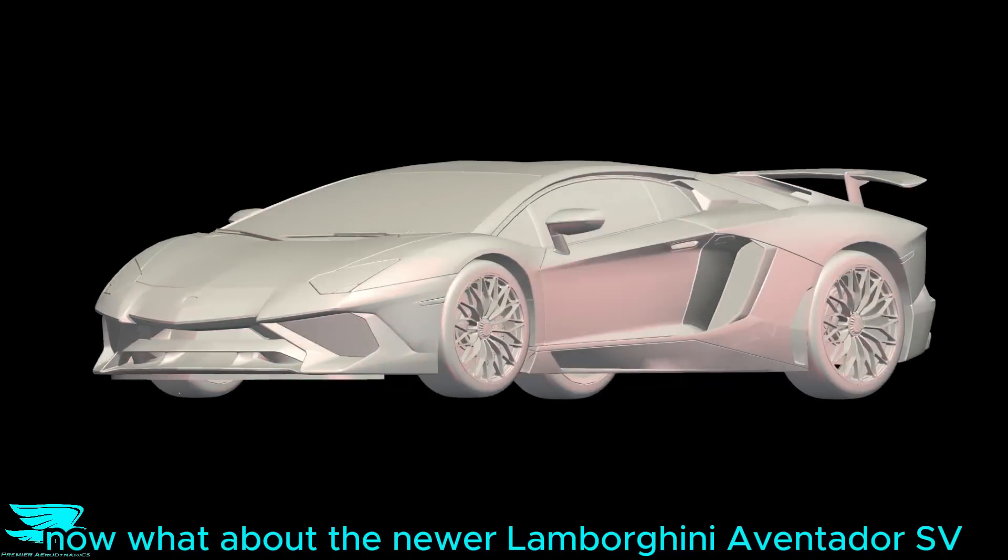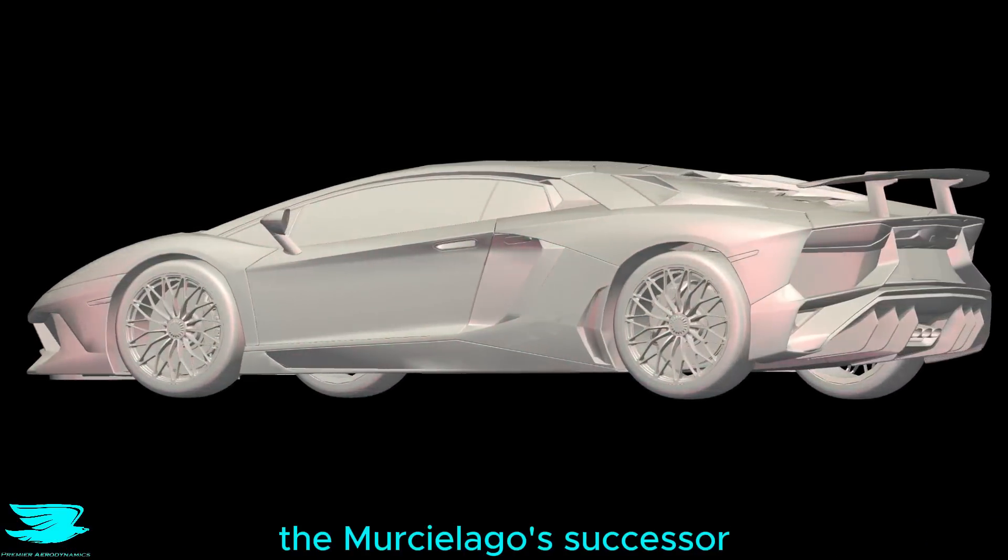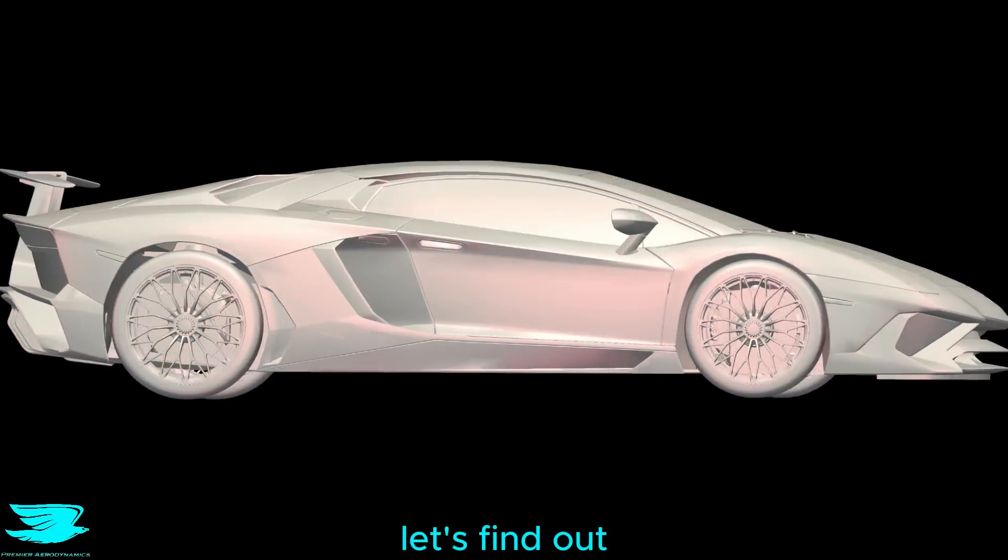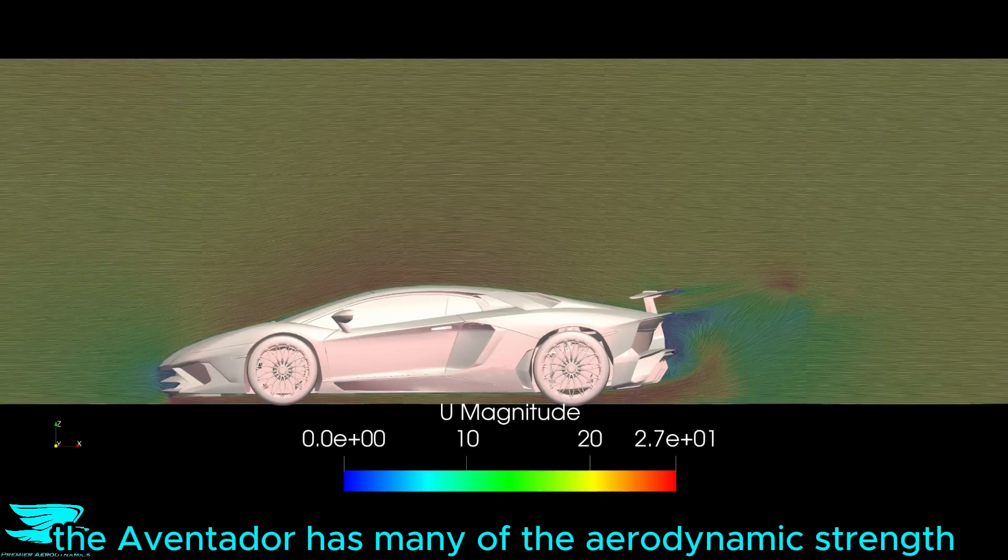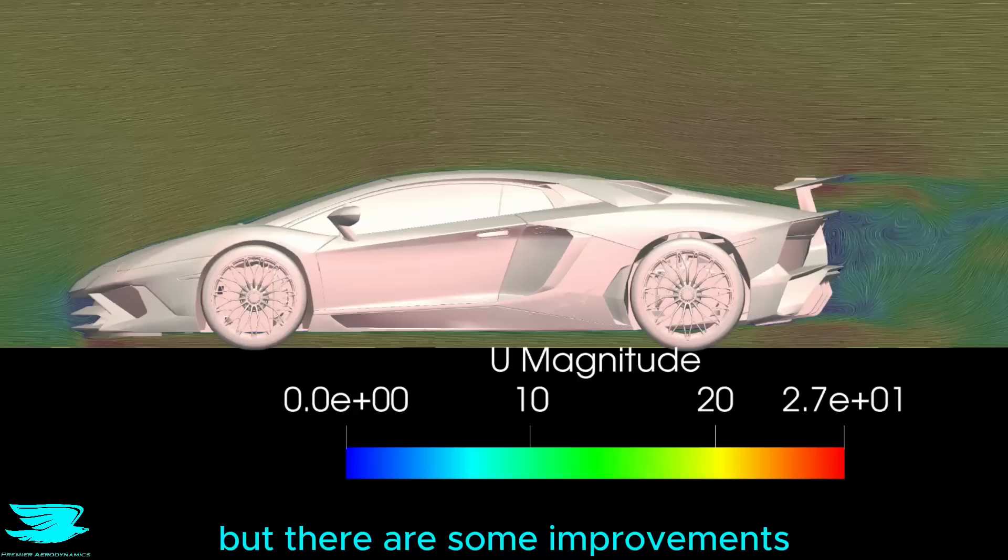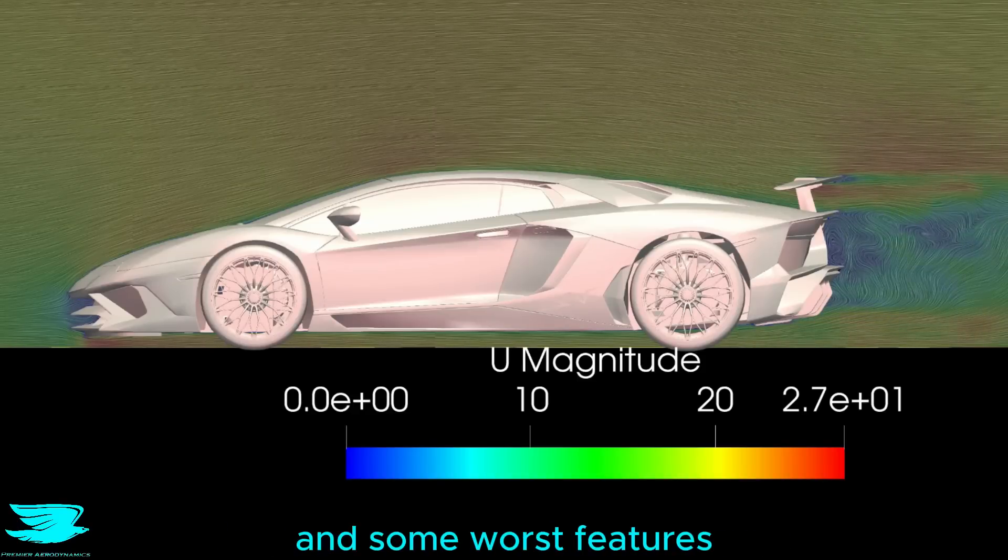Now what about the newer Lamborghini Aventador SV, the Murciélago's successor? Is it less or more aerodynamic? Let's find out. The Aventador has many of the aerodynamic strengths the Murciélago had, such as the very sharp and downwards pointed nose, the great underbody and the diffuser. But there are some improvements and some worse features too.